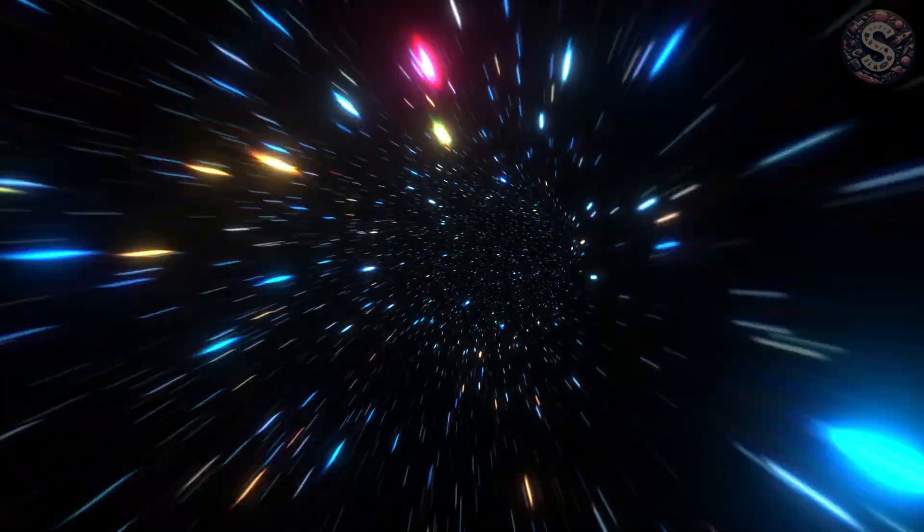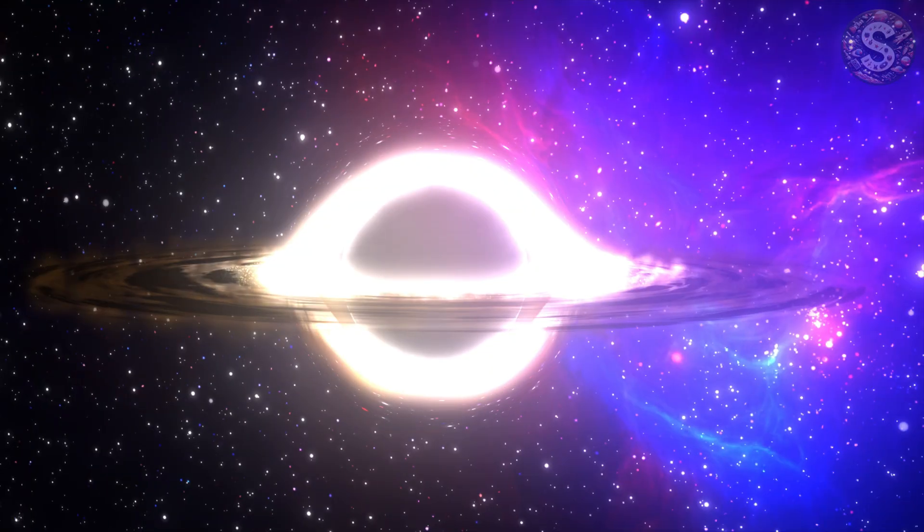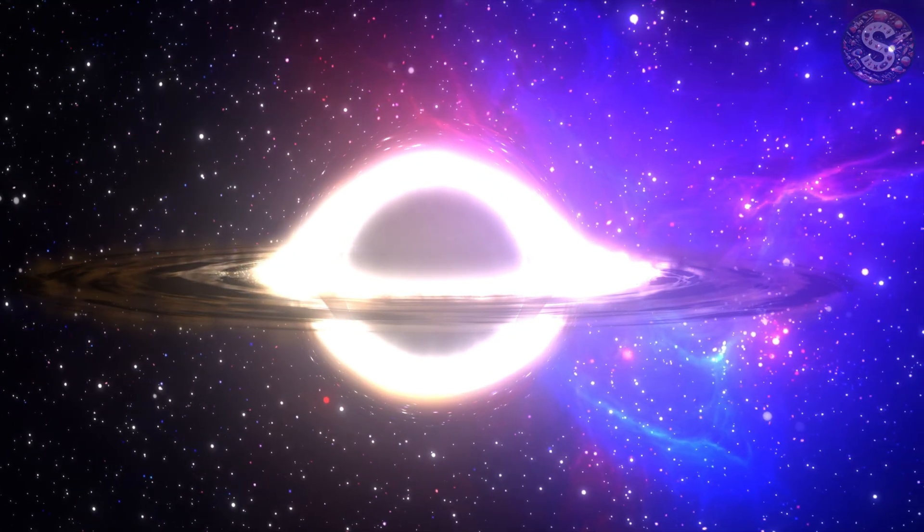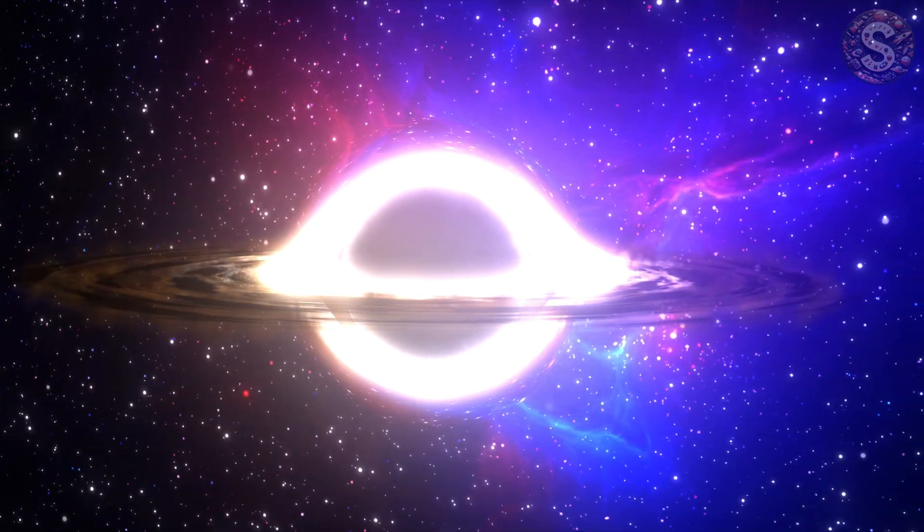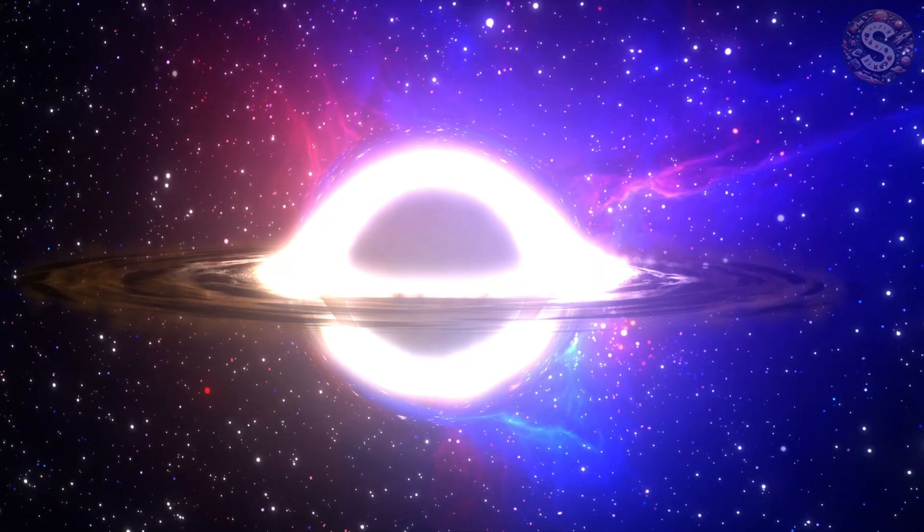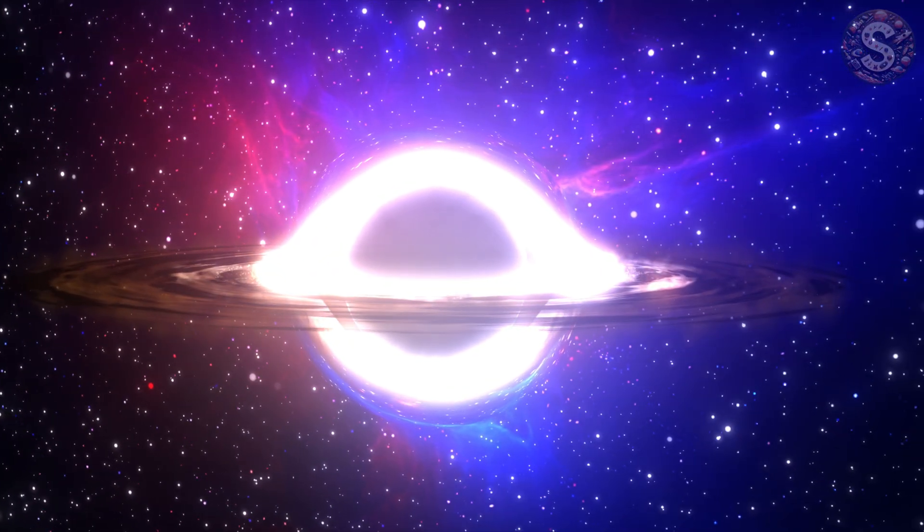Enter Einstein. In his theory of relativity, time is no longer separate from space. The two are bound together in a fabric called spacetime, and that fabric bends. Travel near the speed of light or get close to a massive object like a black hole and time doesn't tick the same way it does for someone far away. Your seconds stretch compared to theirs. Time is relative, slippery and dependent on your perspective.